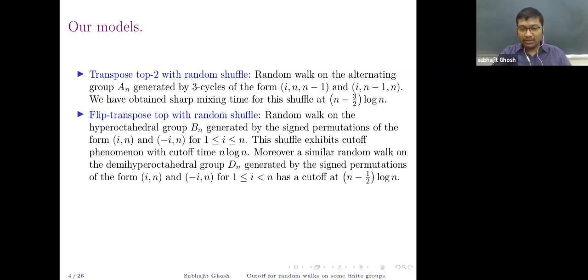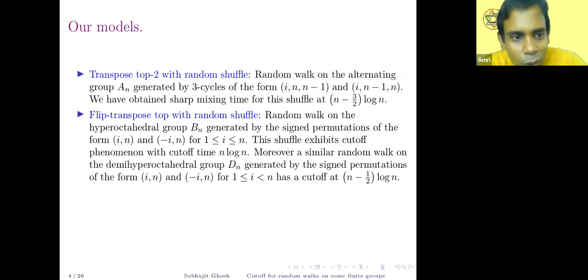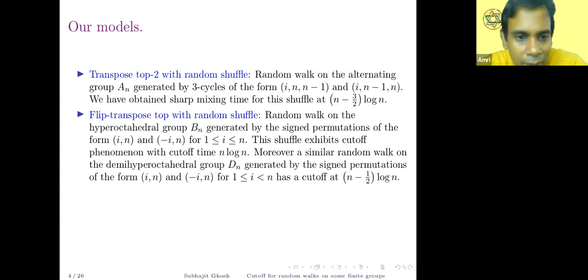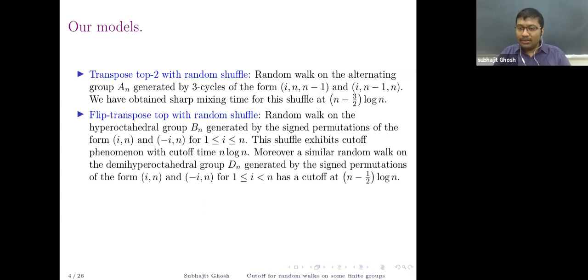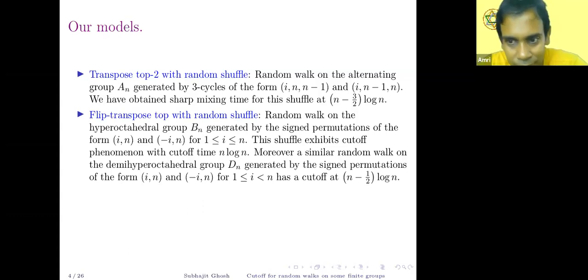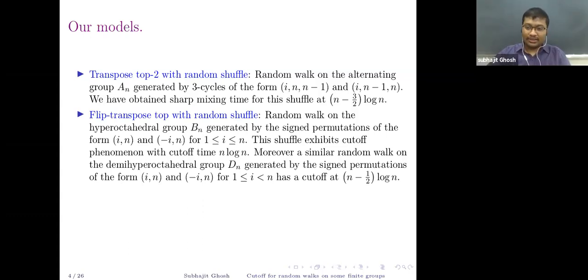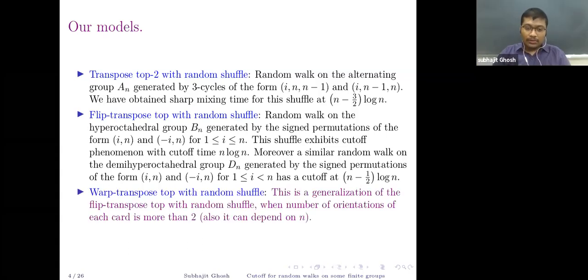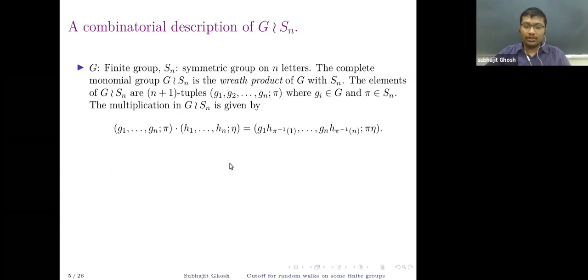Before going on, let me take a couple of questions. The mixing time for Diaconis and Shahshahani was (1/2) n log n. I will explain what mixing time and cutoff mean a bit later — please ask questions at that point. Now, the wreath-product top-with-random shuffle generalizes the flip top-with-random shuffle when the orientations of cards are more than two, and the orientation may also depend on the number of cards n.